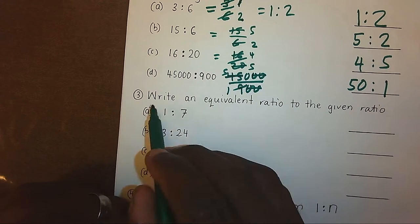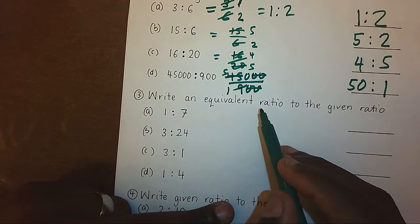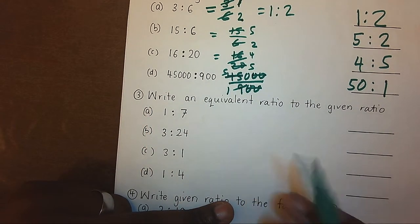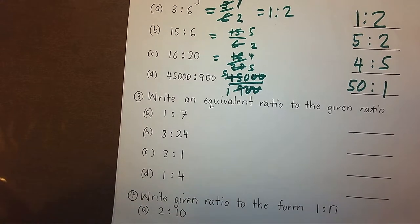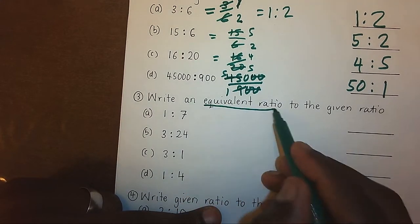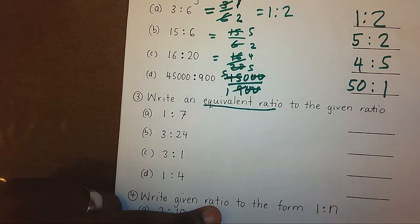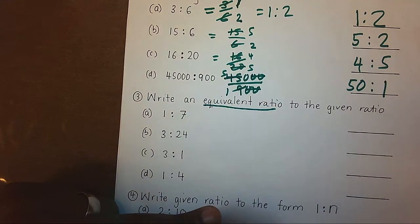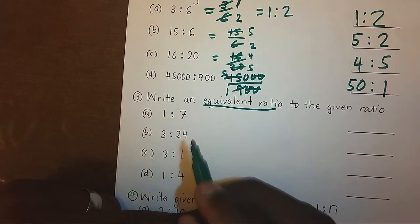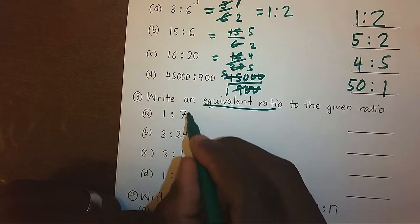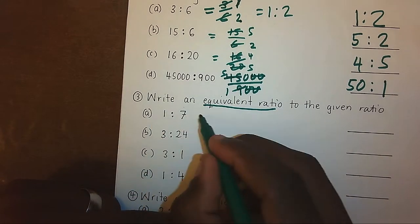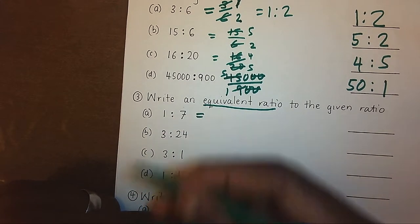Now, write an equivalent ratio to the given ratio. What is an equivalent ratio? This is a ratio which has exactly the same value as the given ratio. All equivalent ratios, if I have a simplified ratio, equivalent ratios will be the multiples of these.